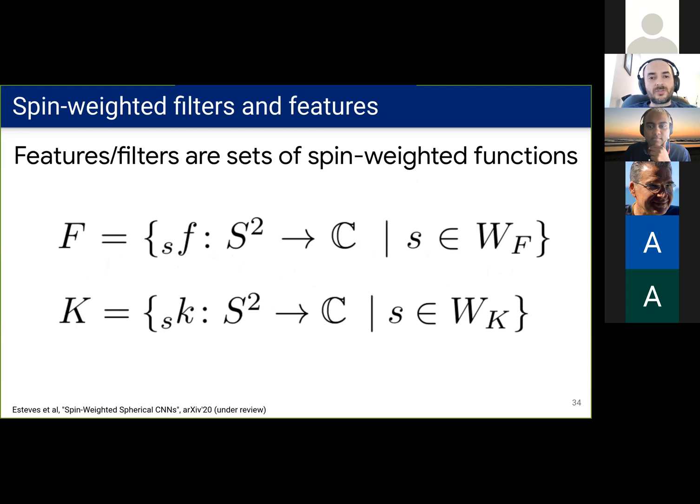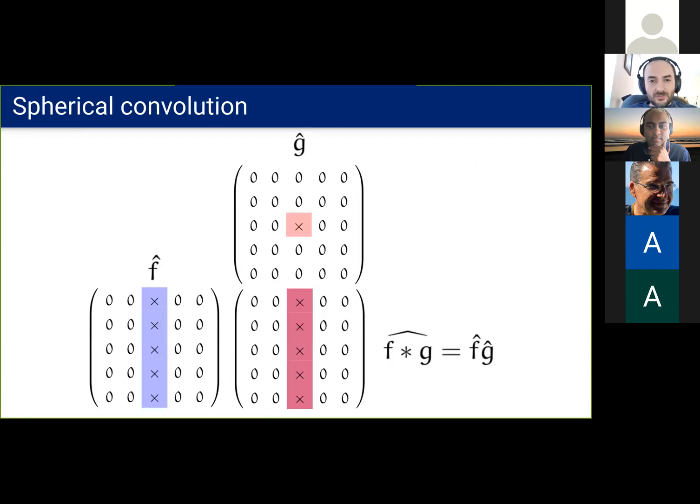Now we define filters and feature maps of our network as sets of spin-weighted spherical functions of different spin weights.